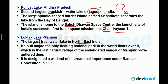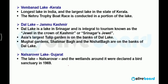Loktak Lake in Manipur is the largest freshwater lake in northeast India. Keibul Lamjao is the only floating national park in the world, and it floats over Loktak Lake in Manipur. Loktak Lake is also included in the Ramsar Convention site.